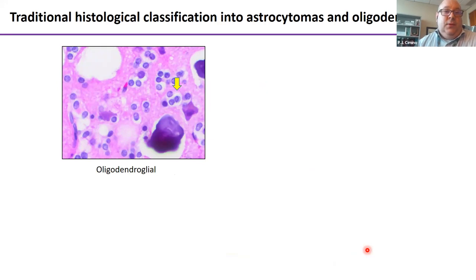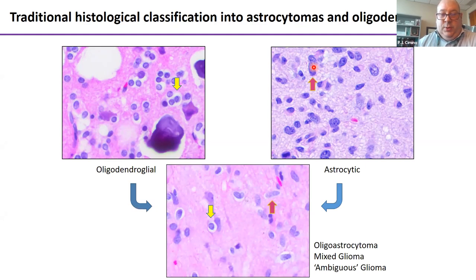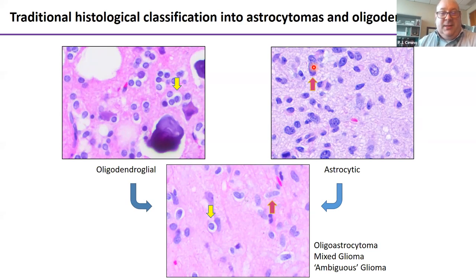Traditionally, classification of diffuse gliomas has been either oligodendroglial — tumor cells that look like normal oligodendroglial cells, round and regular with paranuclear clearing or a fried egg appearance — or astrocytic tumors, which are more pleomorphic with increased nuclear size, hyperchromatic and irregular nuclei. When tumors had mixed morphologies with both oligodendroglial and astrocytic features, this led to poor inter-observer reliability and variability in diagnoses, causing heated discussions at QA conferences.